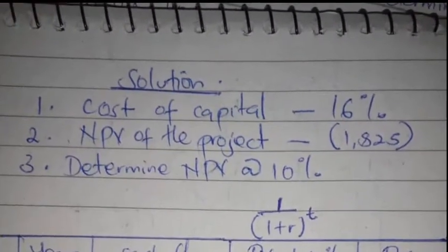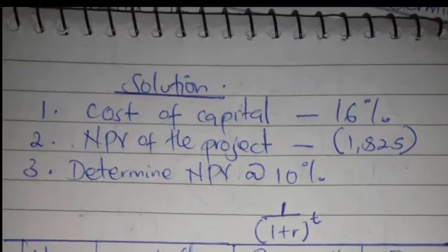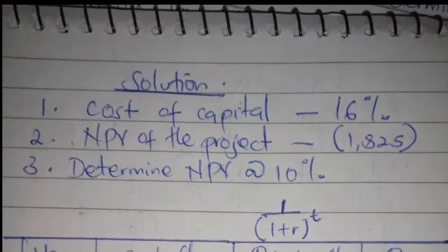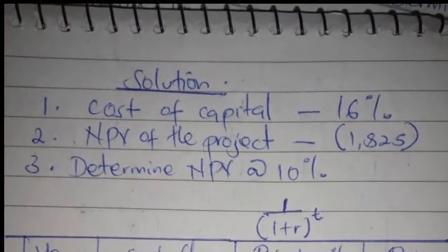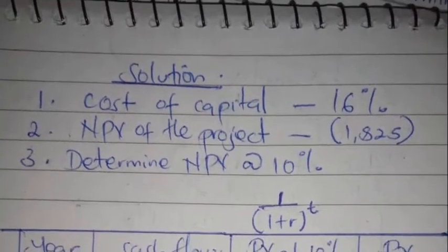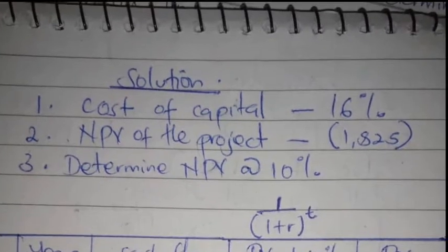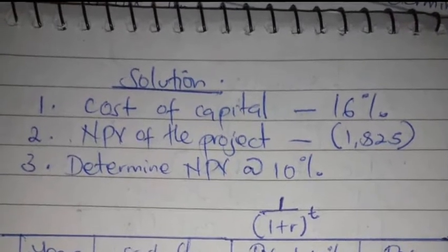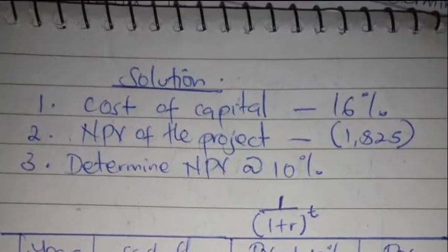Following the three steps: Step 1 — the cost of capital is 16%. Step 2 — the NPV was given as negative $1,825. Step 3 — since the NPV is negative, we determine a lower rate compared to the cost of capital. We will use a lower rate of 10% and calculate NPV at 10% in order to be able to calculate the IRR of the project.